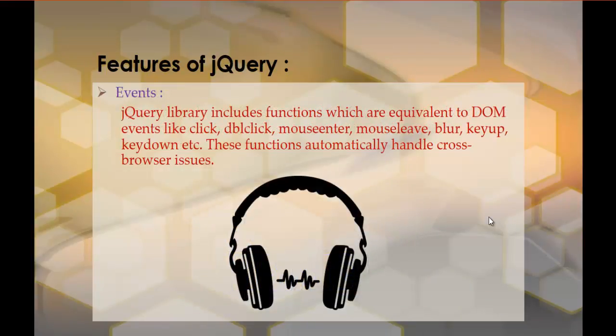Coming to Events: what do you mean by an event? It's something like clicking on a button and immediately something happens — for example, when I click a button the background color of the webpage changes. jQuery provides functions which are equivalent to DOM events like click, double click, mouse enter, mouse leave, blur, key up, key down, etc. Events are about listening to what a user does and reacting accordingly. This is the feature of jQuery called Events.